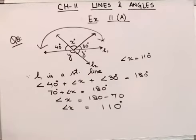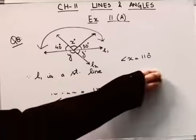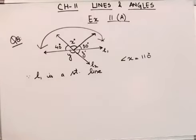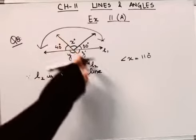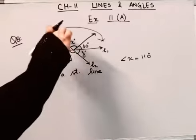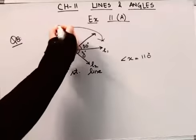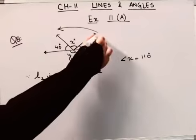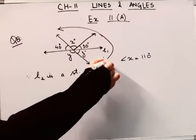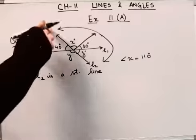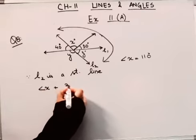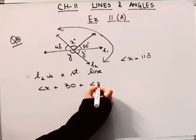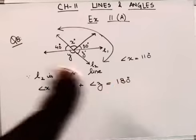So now x is found out. Now we have to find out y and z. Let's see, L2 is a straight line. L2 is also a straight line. That means whatever angles come on L2, they will form a straight angle. Straight angle sum is 180 degrees. So I'll add x plus 30 plus angle z, this equals 180 degrees.